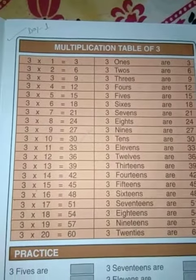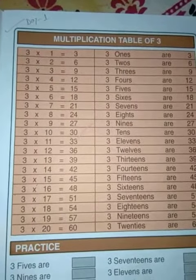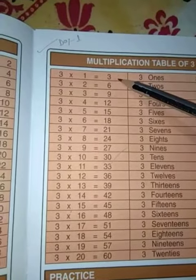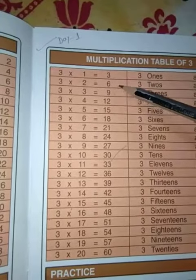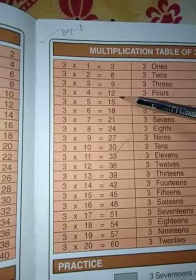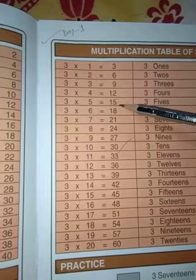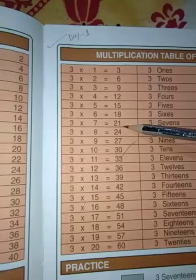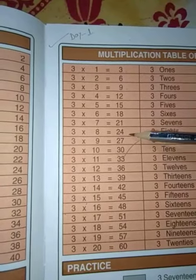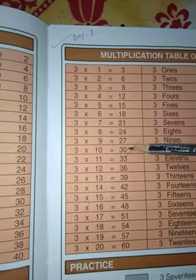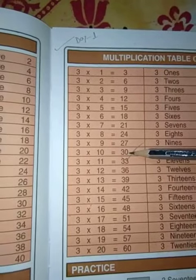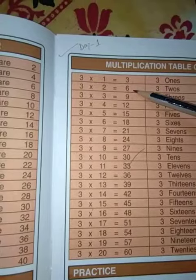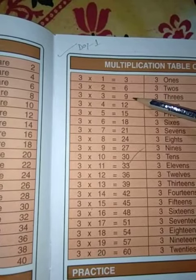Three one's are three, three two's are six, three three's are nine, three four's are twelve, three five's are fifteen, three six's are eighteen, three seven's are twenty-one, three eight's are twenty-four, three nine's are twenty-seven, three ten's are thirty.